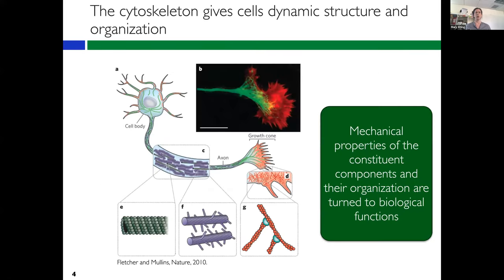Many of the processes by which the cell achieves these things are underlied by cytoskeletal structures. Many different structures within the cytoskeleton give cells their dynamic structure and organization. We can think of which cytoskeletal molecules are used for a particular structure as being tuned to the polymer used. I'm going to talk primarily about microtubule-based structures. Microtubules are the long and straight elements of the cytoskeletal family — they have persistence lengths longer than the cell, so they're pretty long and straight over the cell length scale.